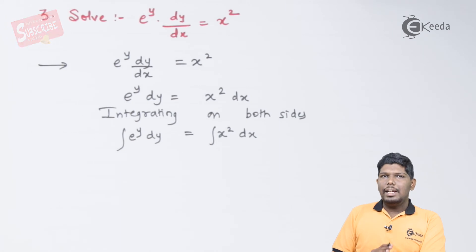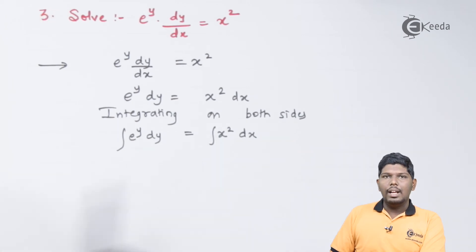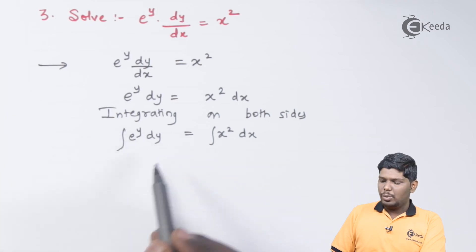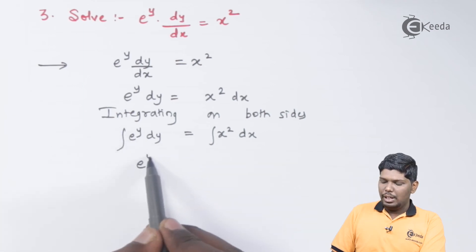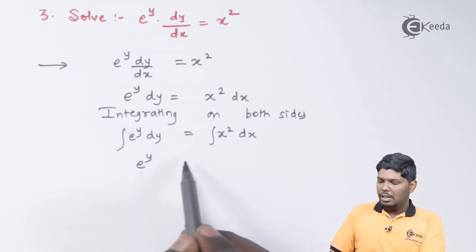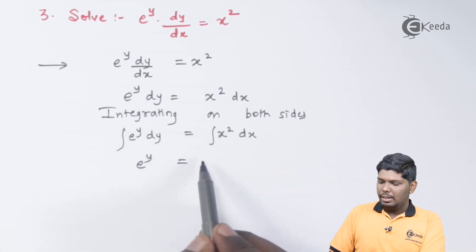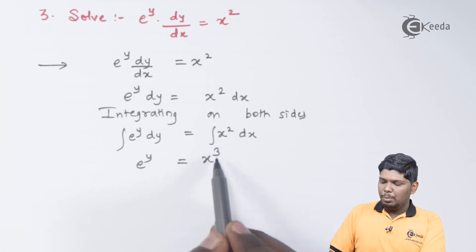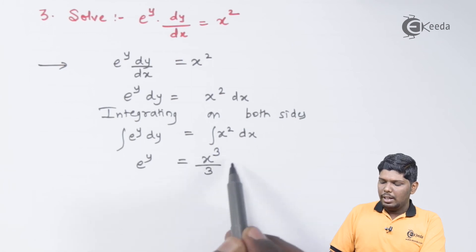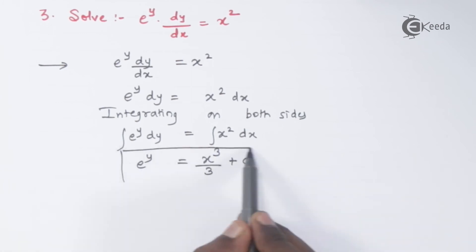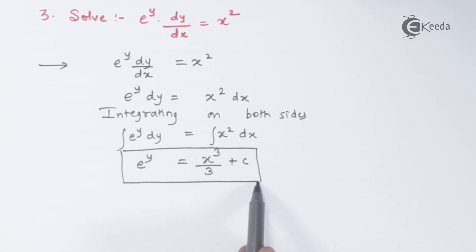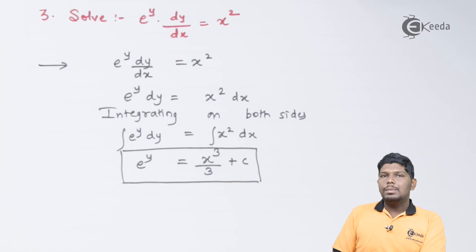So we have integral e raised to y dy is equal to integral x square dx. Now integral of e raised to y will give you e raised to y only, and integral of x square will be x cube upon 3 plus c. This becomes our general solution.